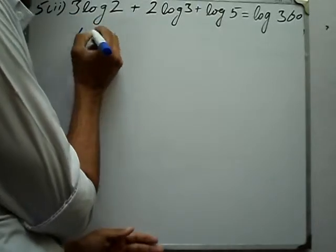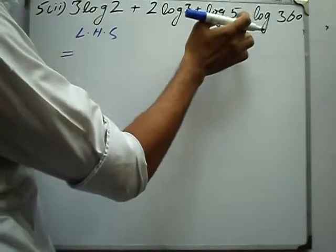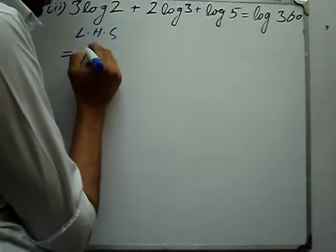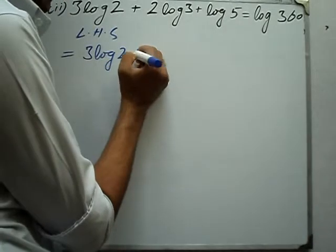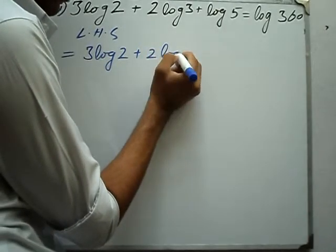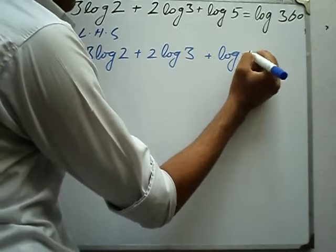So we have the left hand side. We'll solve the left hand side. Left hand side must equal to the right hand side: 3 log 2 plus 2 log 3 plus log 5.